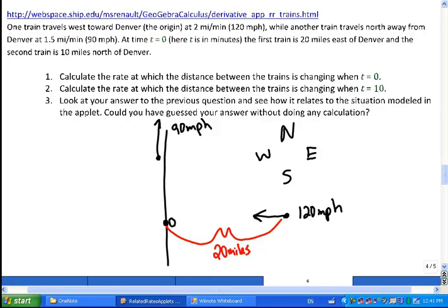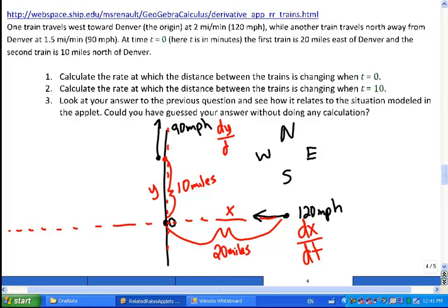And it says the first train is 20 miles east of Denver, so that'll be 20 miles of distance. So we're going to need to be able to talk about this train. So since this is kind of like we're using an origin here, kind of like we have a graph, we might as well call this distance x, like the horizontal distance. So we'll call this distance here x. And this represents the change in x with respect to time.